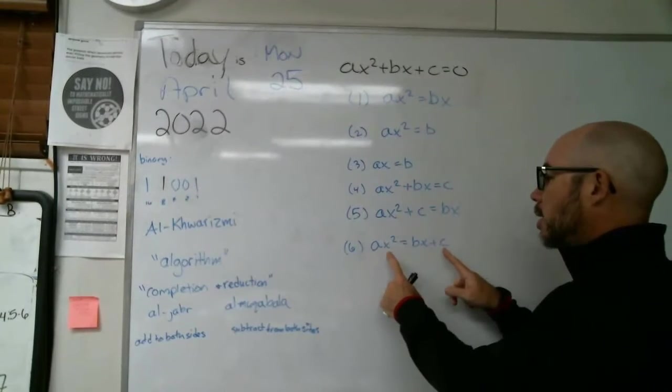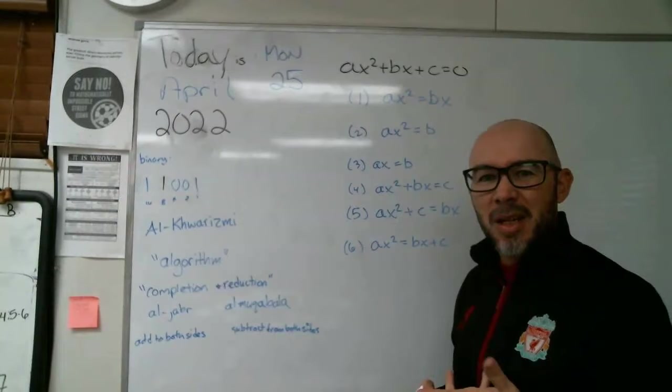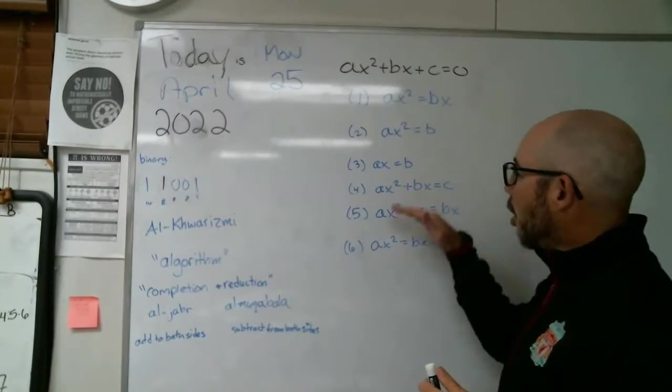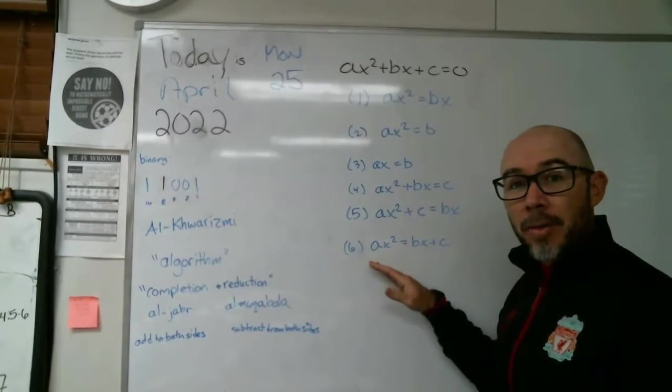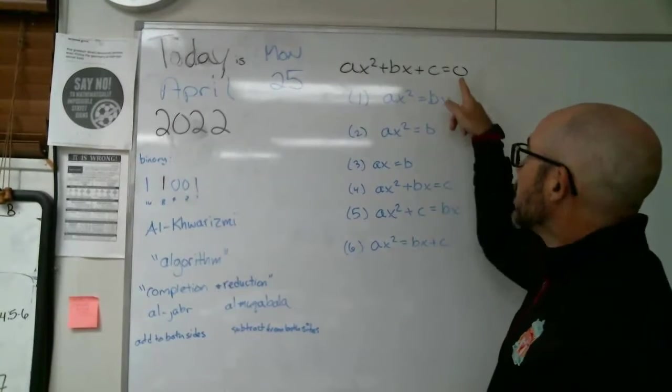We're used to seeing the standard form ax squared plus bx plus c equals zero. But I think you can see that this one is very similar to that. And so is this. And so is this last one. If we just rearrange the parts, we would basically have things in that form. But what I want you to note is that in all of these different forms, there's a couple of things that are missing.